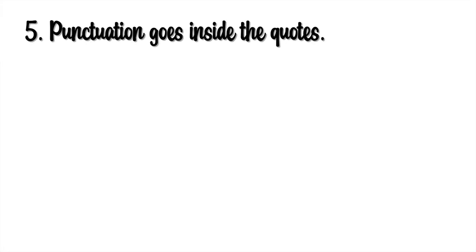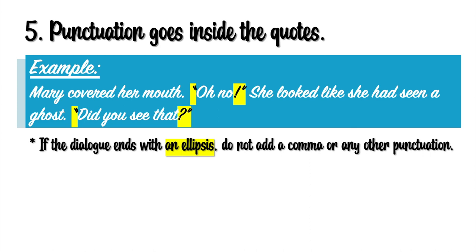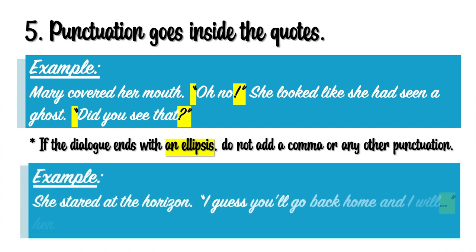Rule number five. On the first example, we have an exclamation mark and it's inside the quotation marks. On the second example, we have a question mark and it goes before the quotation mark. If the dialogue ends with an ellipsis, do not add a comma or any other punctuation. Like in this example: She stared at the horizon. "I guess you'll go back home and I will..." Her voice drifted off. So you can see the ellipsis is inside the quotation marks.